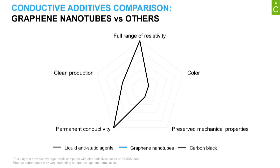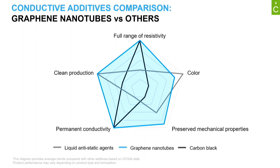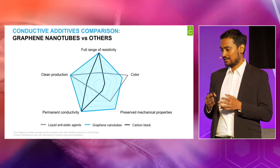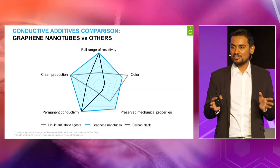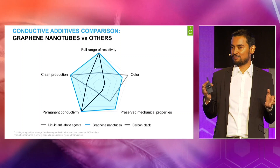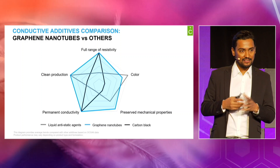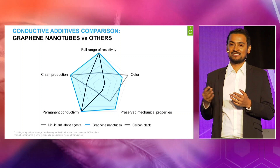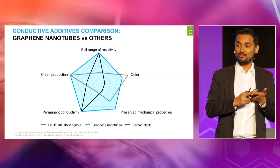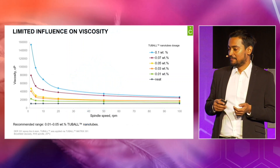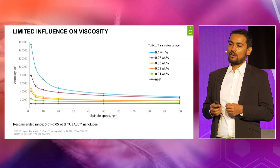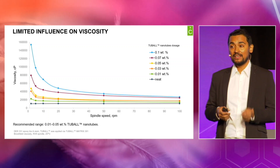In comparison to other additives which bring electrical conductivity — like conductive carbon or liquid anti-static agents — graphene nanotubes bring a whole gamut of benefits. You can get a full range of resistivity, a clean production facility, permanent conductivity, and an option of many colors. Anyone who loves processing conductive carbon either works for a conductive carbon company or hates their facility, because it makes everything black and is really, really dirty. Also, there is very limited influence on the viscosity of the polymer when using graphene nanotubes in the required dosage. They do have a high aspect ratio and bring some thixotropy, but the viscosity influence is almost minimal, as shown in the graph.